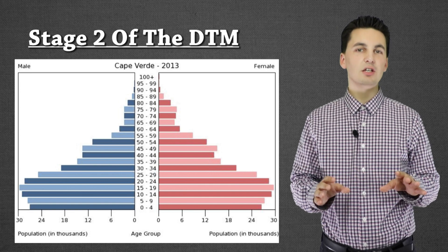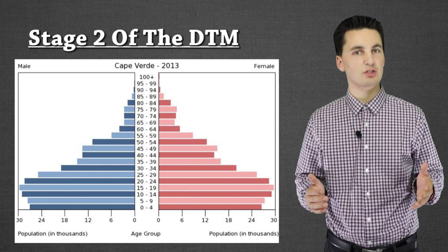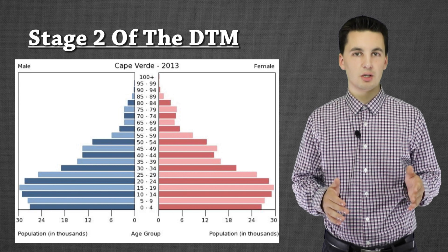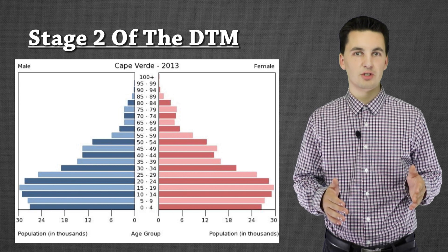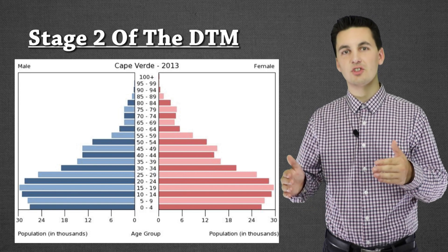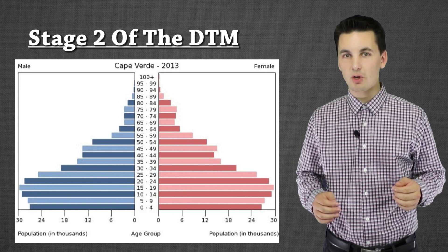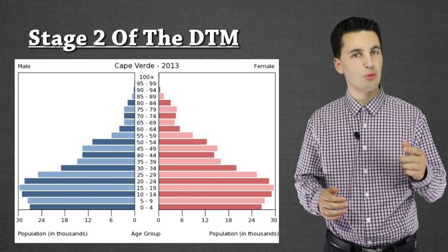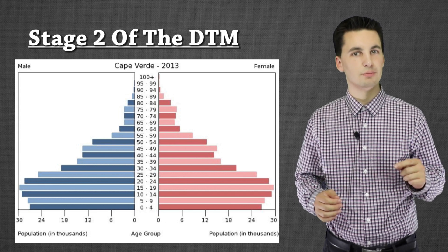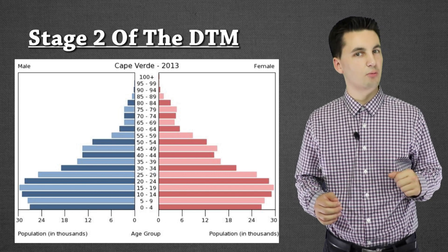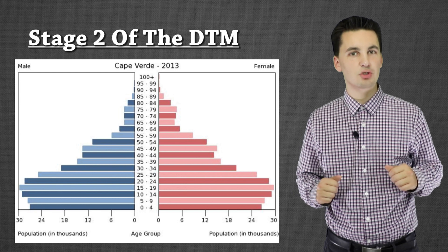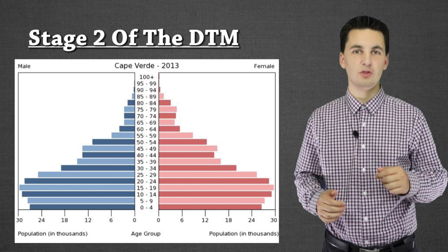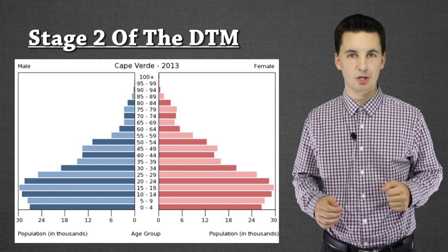Now before we get into stage three, pause this video and think to yourself: what do you think could cause a country to go from stage two to stage three? This is some review of the demographic transition model and it'll help. Pause this and think about it. Alright, let's go to stage three and see if you figured it out using population pyramids.